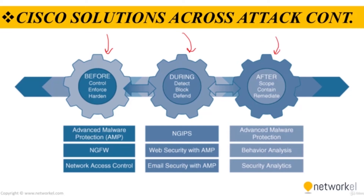In the before phase, full knowledge of all the assets that need to be protected is required, and the types of threats that could target these assets need to be identified. This phase also involves establishing policies and implementing prevention to reduce risk. Cisco solutions for this phase include next-generation firewalls, network access control, network security analysis, and identity services.